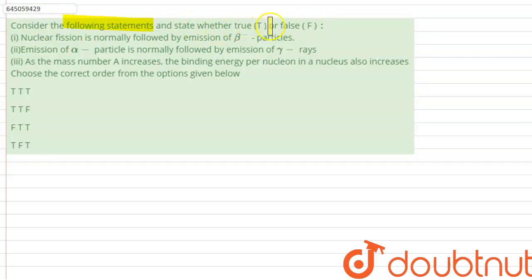Nuclear fission is normally followed by emission of beta particles. Emission of alpha particle is normally followed by emission of gamma rays. As the mass number A increases, the binding energy per nucleon in a nucleus also increases. Choose the correct order from the options given below.